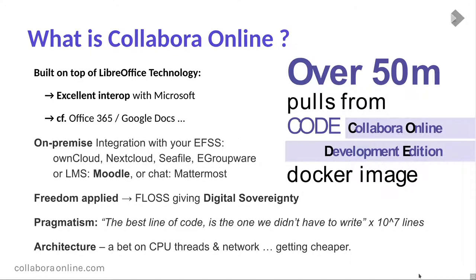Collabora Online is not a web service — it's software you run yourself, deployed on your own premise under your own control. That gives you a huge degree of freedom. It's an open source solution that gives you back your digital sovereignty and control over your data.